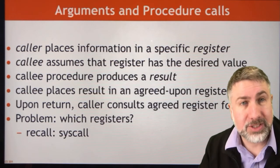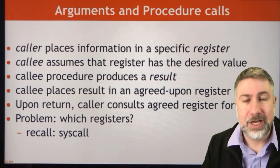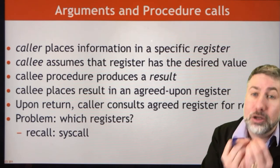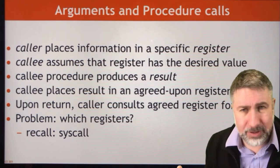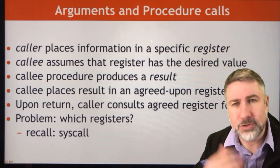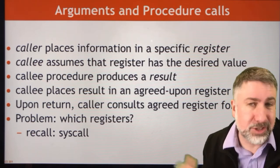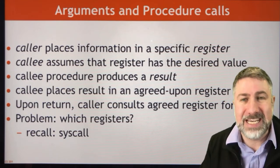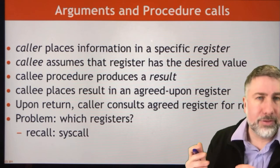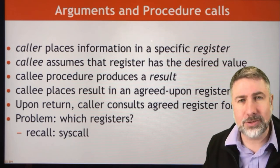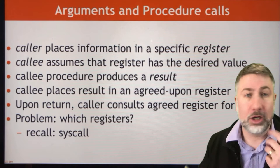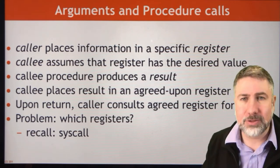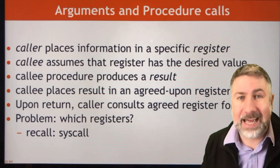The basic way we do this is the caller is going to place some information in a known register that both the caller and the callee agree to. If they don't know which register to use then we can't find that information or pass it back and forth. So we're going to agree to certain information being in certain registers. The callee assumes that register has the desired value, produces a result, and puts it in an agreed-upon register that the caller will look at after it's done.